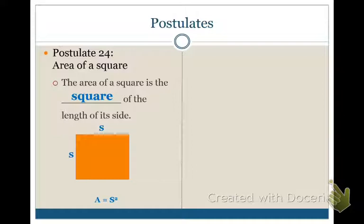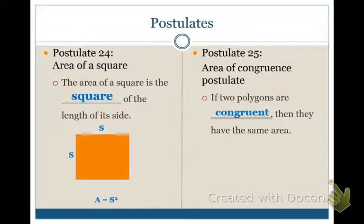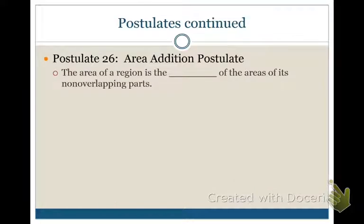The next postulate centers around congruent polygons. If we can find the area of one polygon and there's another polygon that's congruent to it, then they're going to have the same area. For example, these two trapezoids, if they're congruent, they're going to have the same area — the same base length, the same height — so finding the area is going to be the same. No big shocker there.